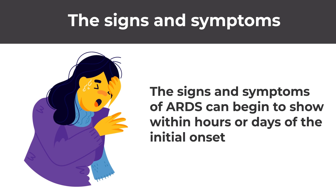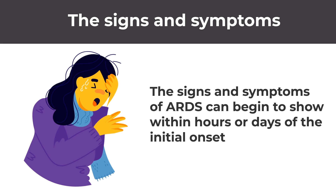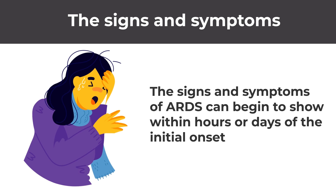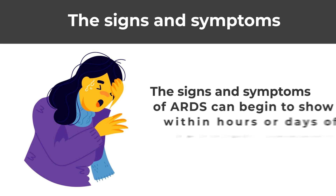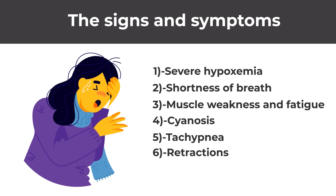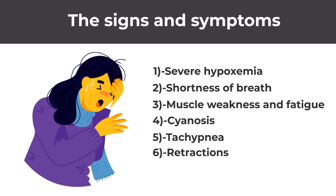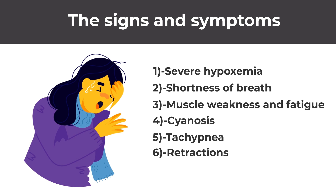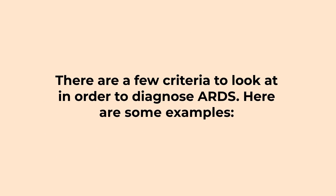The signs and symptoms of acute respiratory distress syndrome can begin to show within hours or days of the initial onset. These include severe hypoxemia, shortness of breath, muscle weakness and fatigue, cyanosis, tachypnea, and retractions.